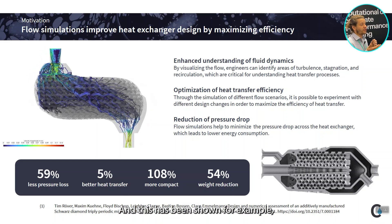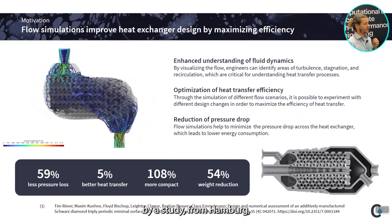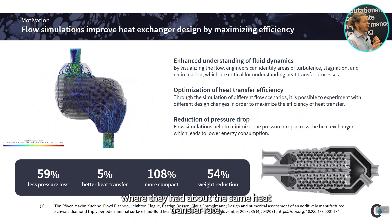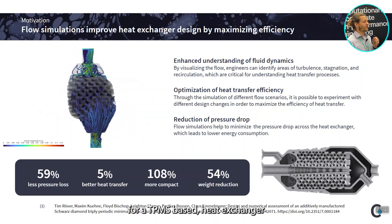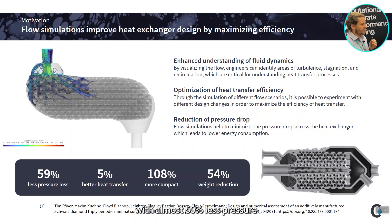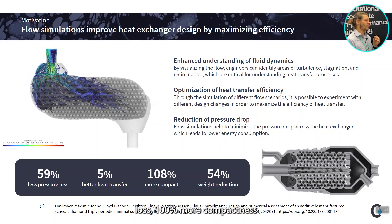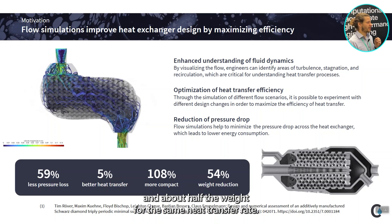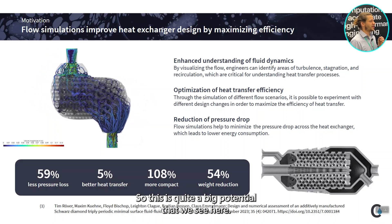You can optimize heat transfer efficiency through better flow and better utilization of the surface that TPMS structures give you. And lastly, you can reduce pressure drop quite a bit. This has been shown, for example, by a study from TU Hamburg last year where they had about the same heat transfer rate for a TPMS-based heat exchanger with almost 60% less pressure loss, 100% more compactness, and about half the weight for the same heat transfer rate.